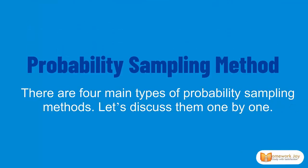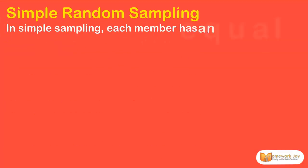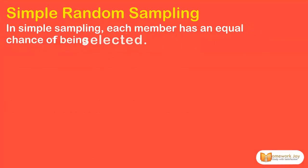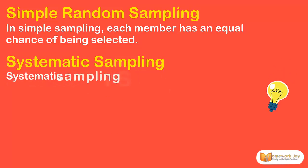Probability sampling method. There are four main types of probability sampling methods. Let's discuss them one by one. First, Simple Random Sampling — each member has an equal chance of being selected.